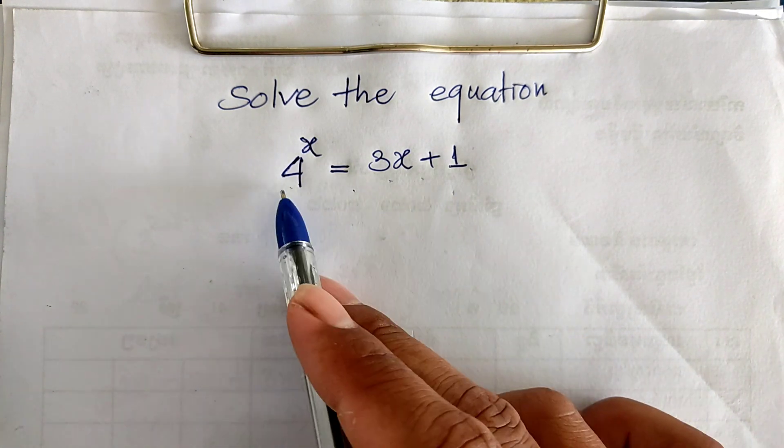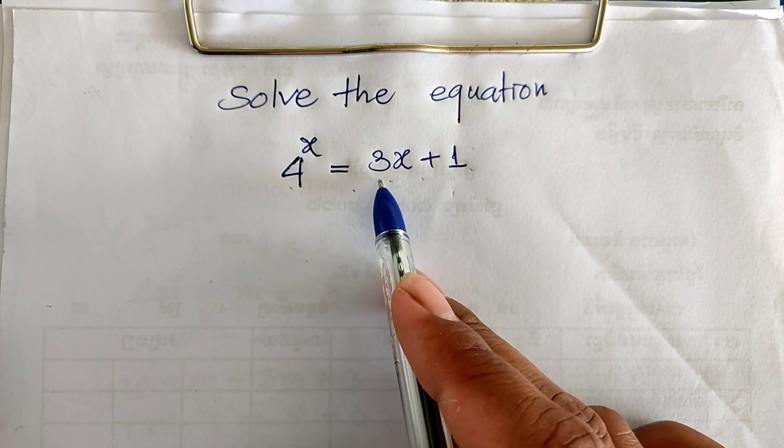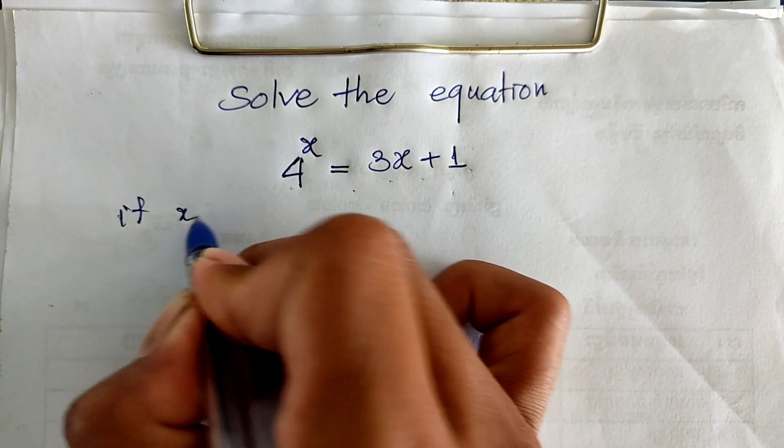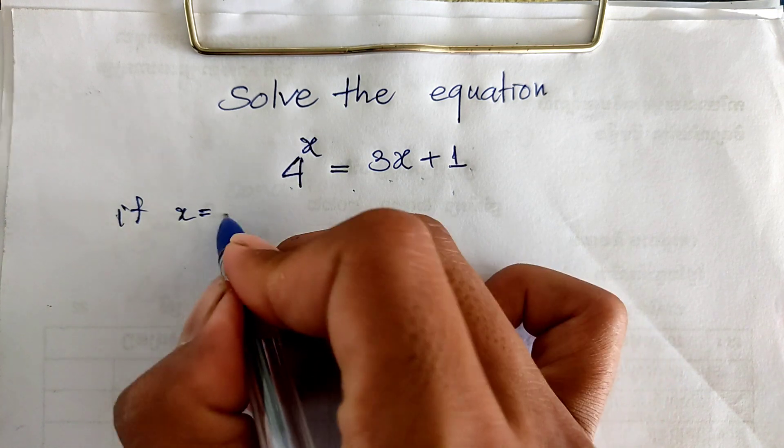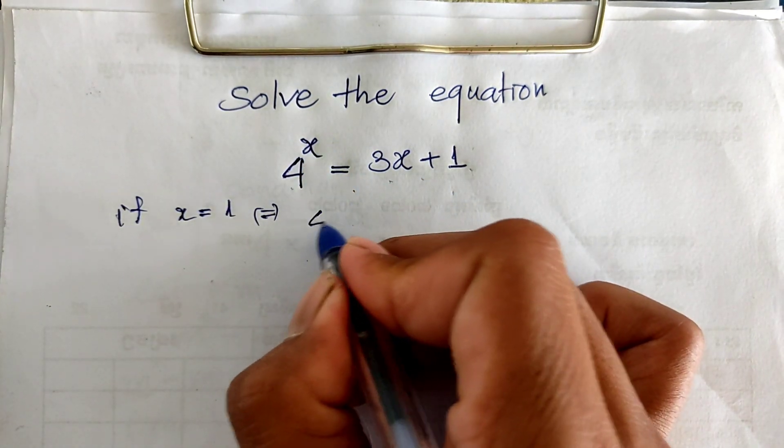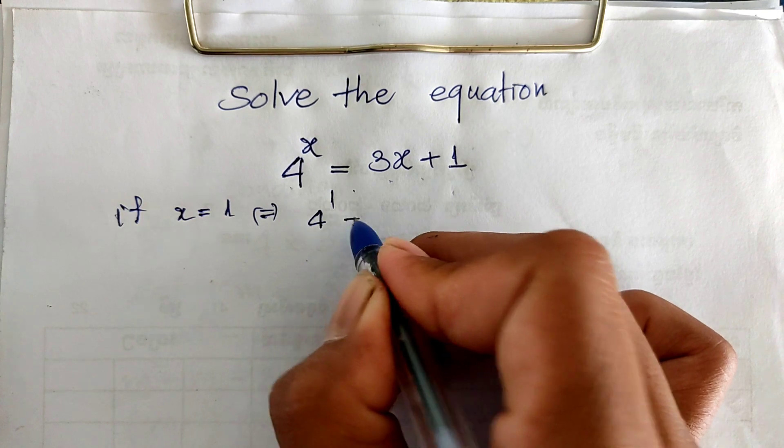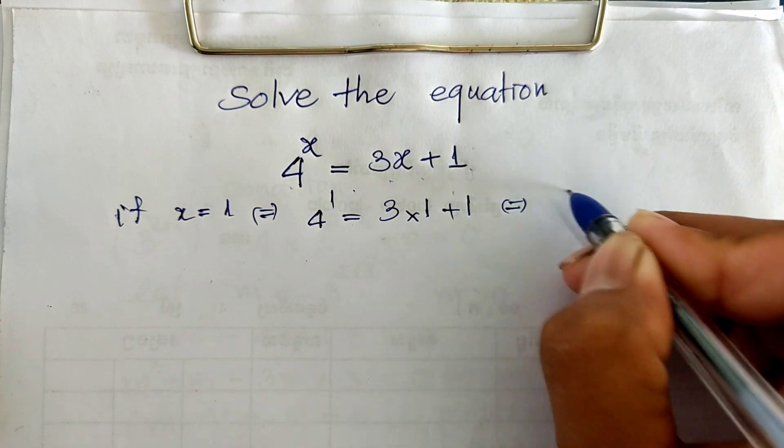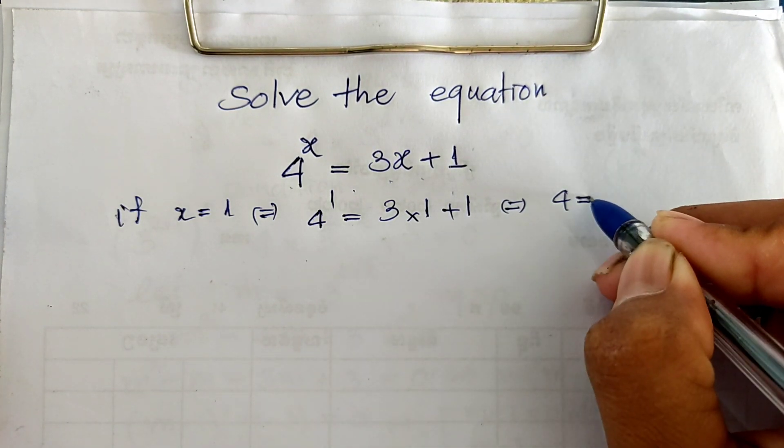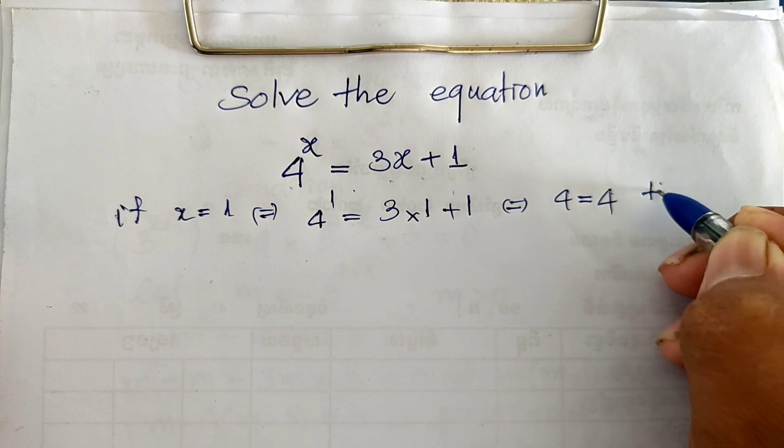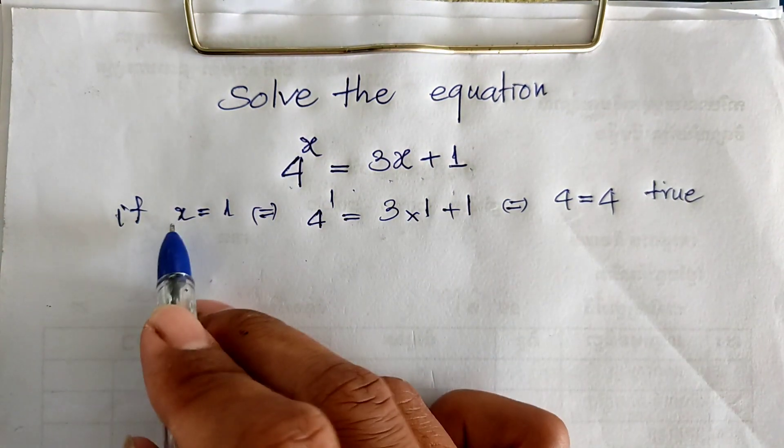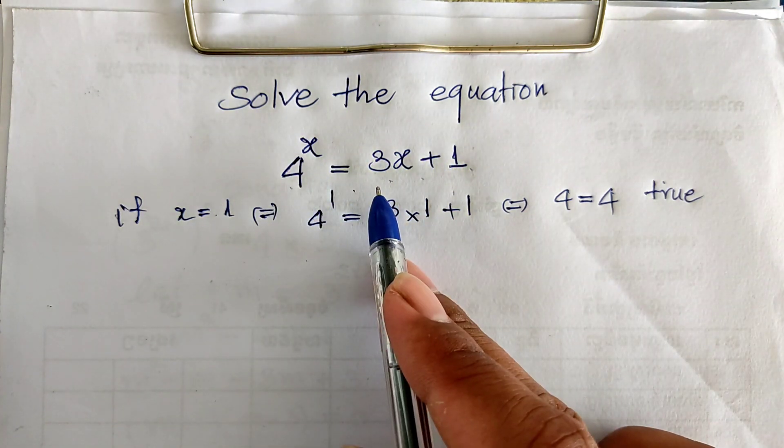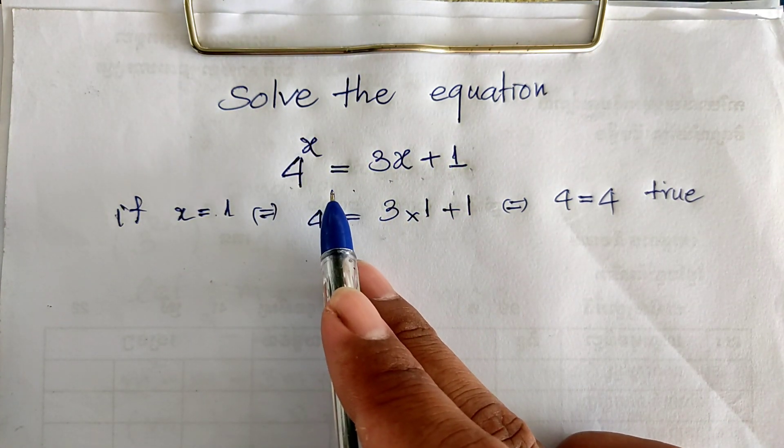This question is 4 power x equals 3x plus 1. So if I replace it by 1, I get 4 power 1 equals 3 times 1 plus 1. So this we get 4 equals 4. It's true. So x equals 1 is verifying our solution.